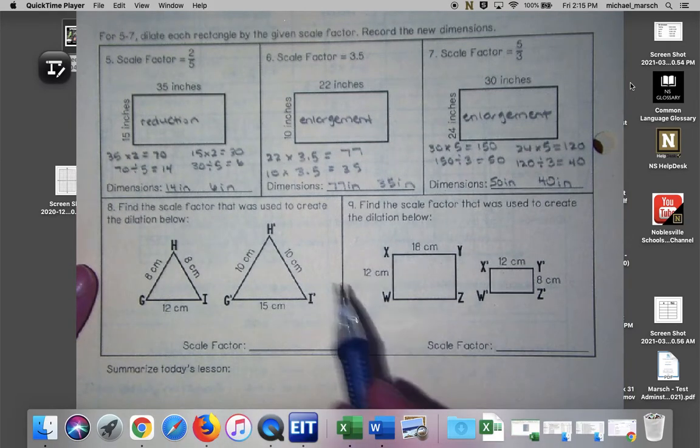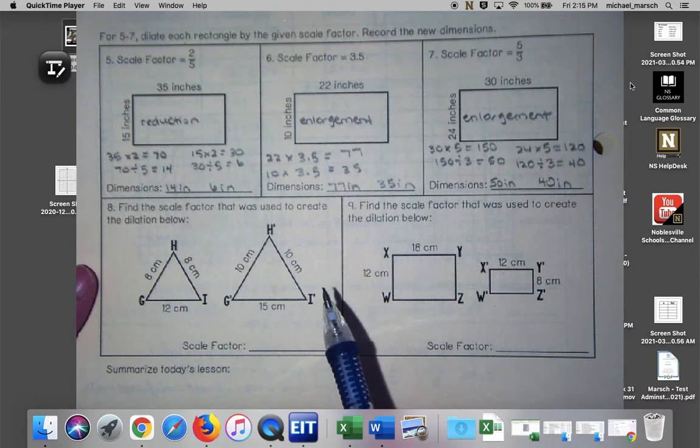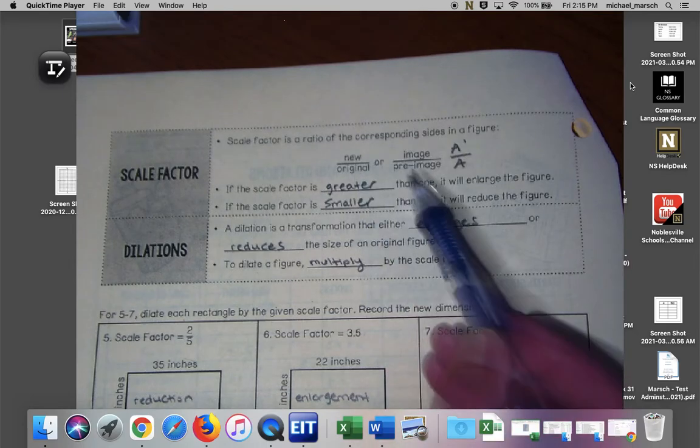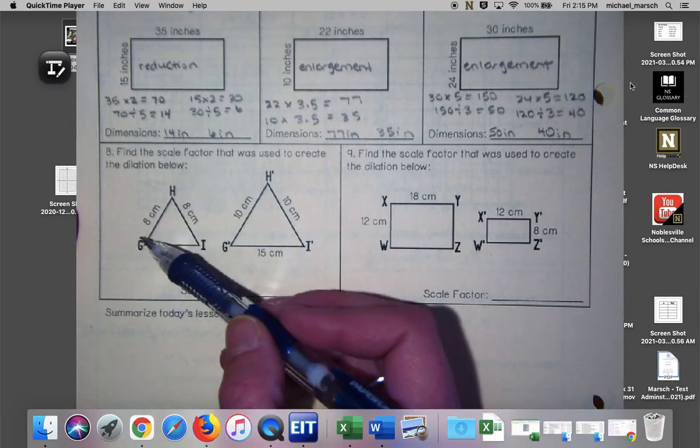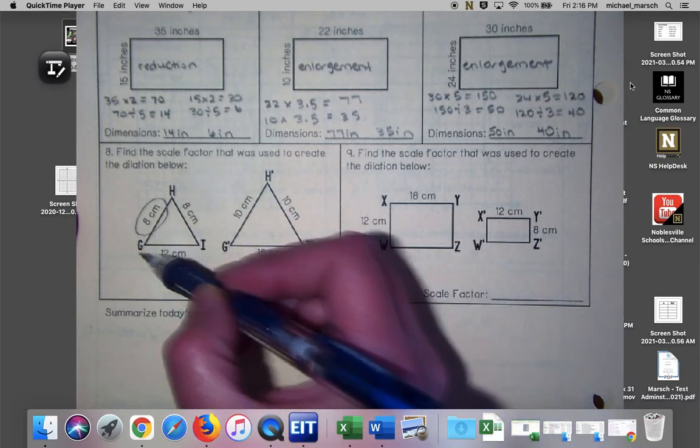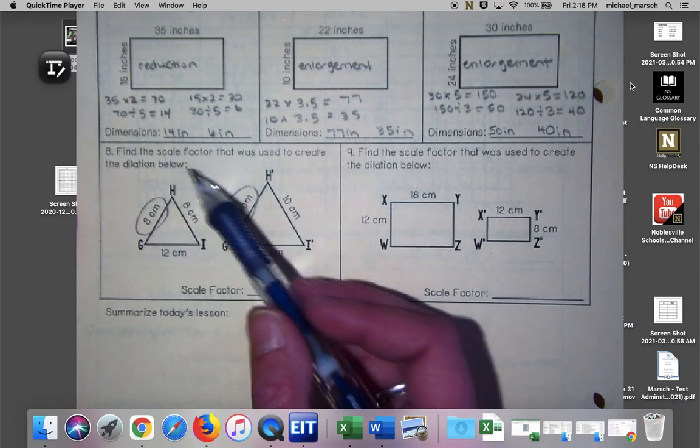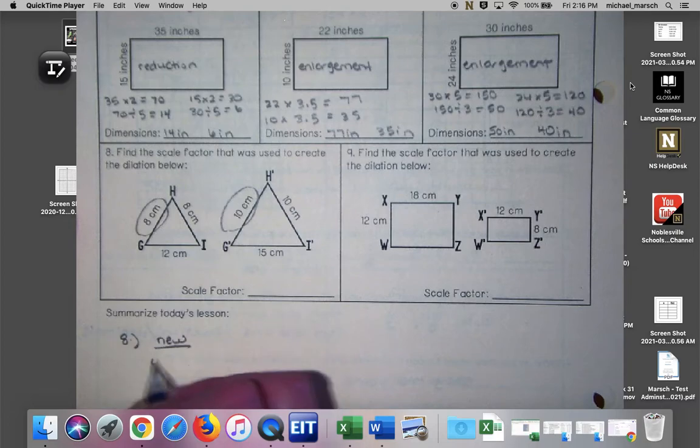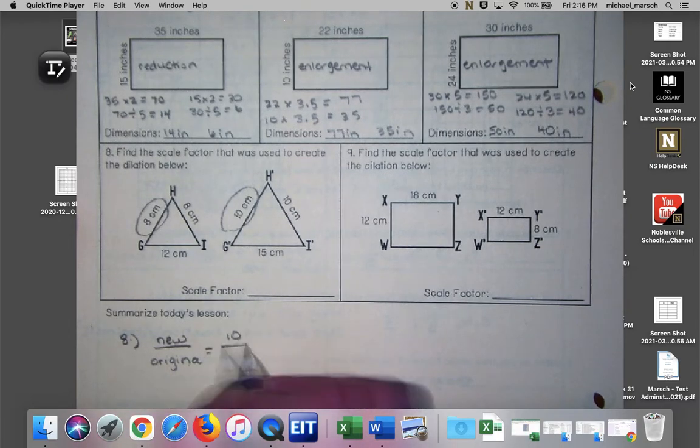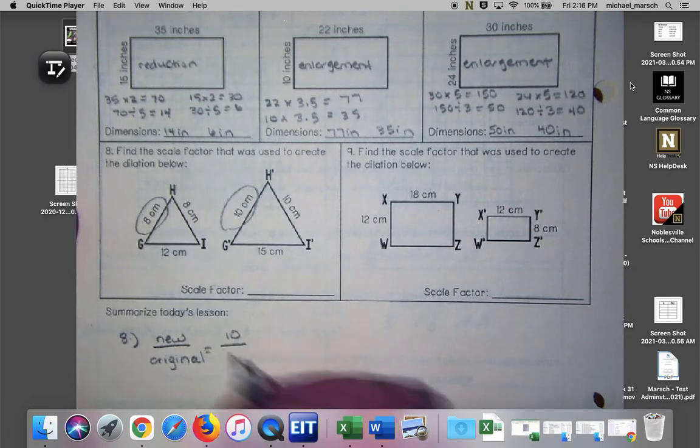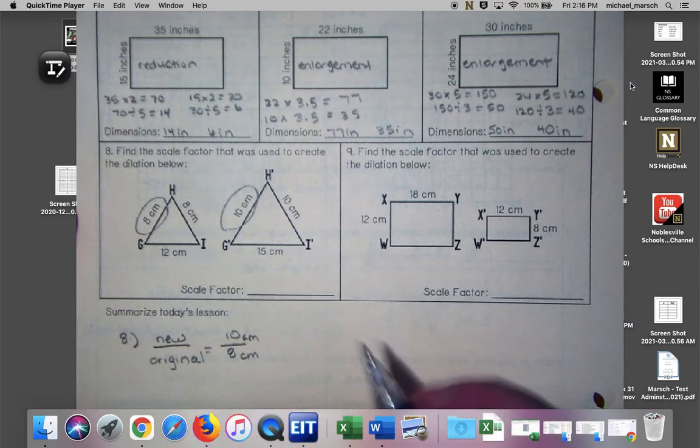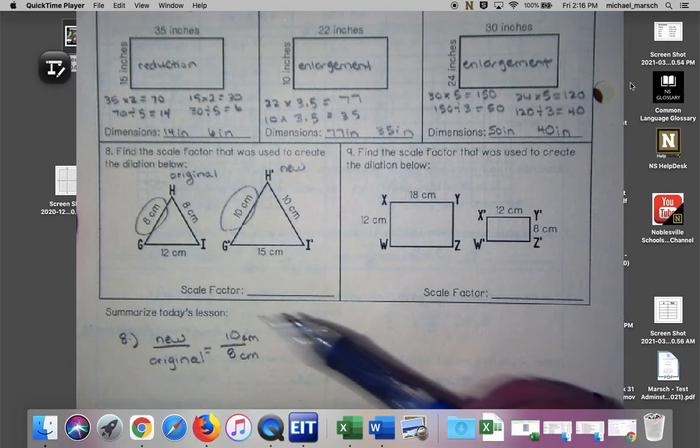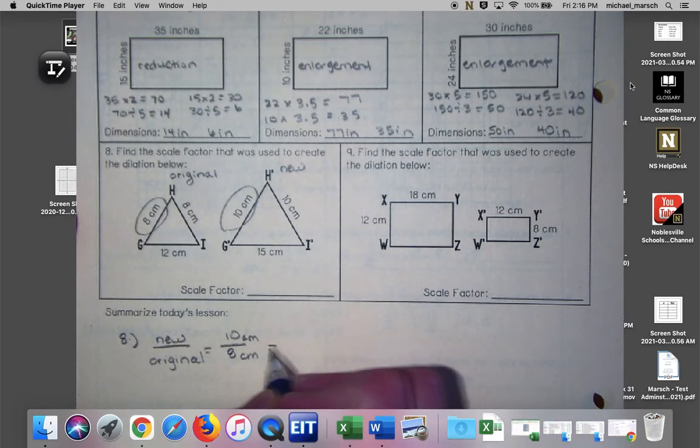Okay these are slightly different because we don't have the scale factor. We're trying to find the scale factor here so we're going to use this up here where it's new divided by original. So we're going to, down here for number eight, I'm going to pick two corresponding sides. So I'm going to use the eight, the G to the H and the G prime to the H prime. You have to use the exact same sides of the triangle. So my new value is 10 and my original value was the eight centimeters.